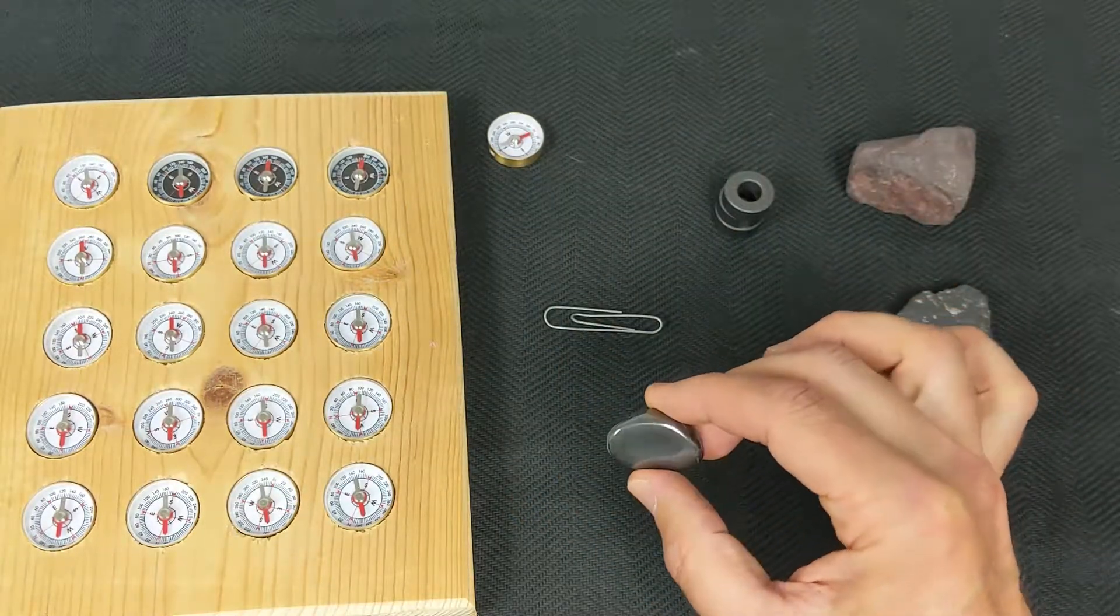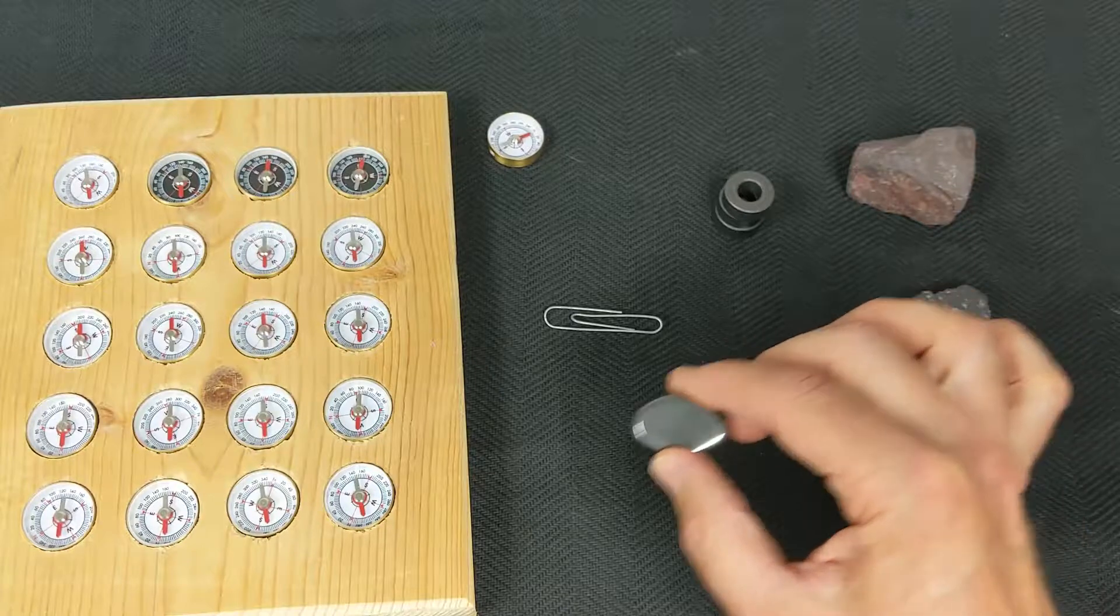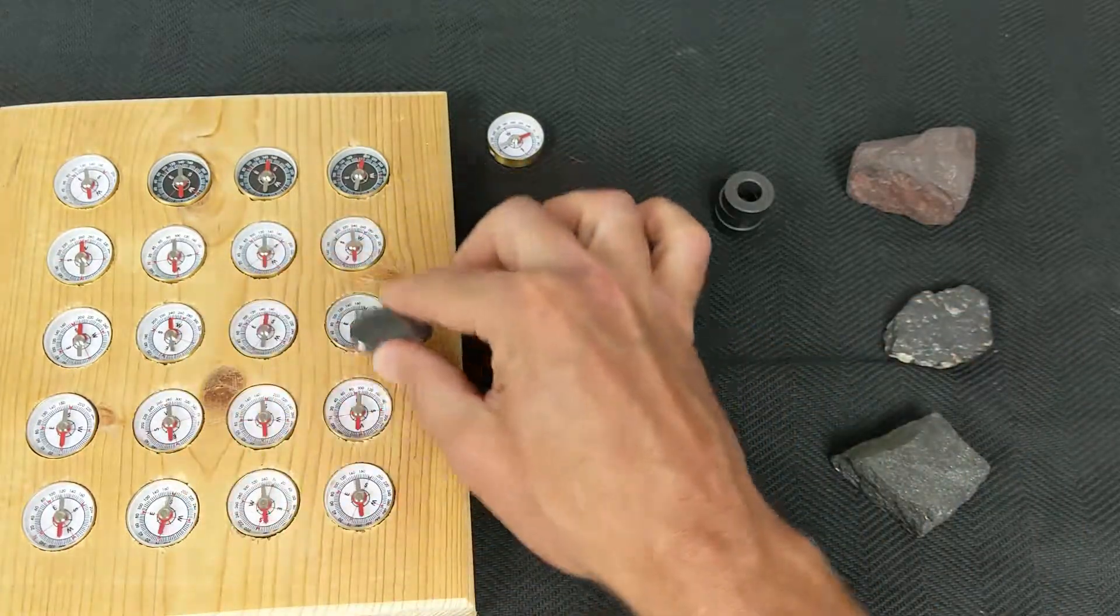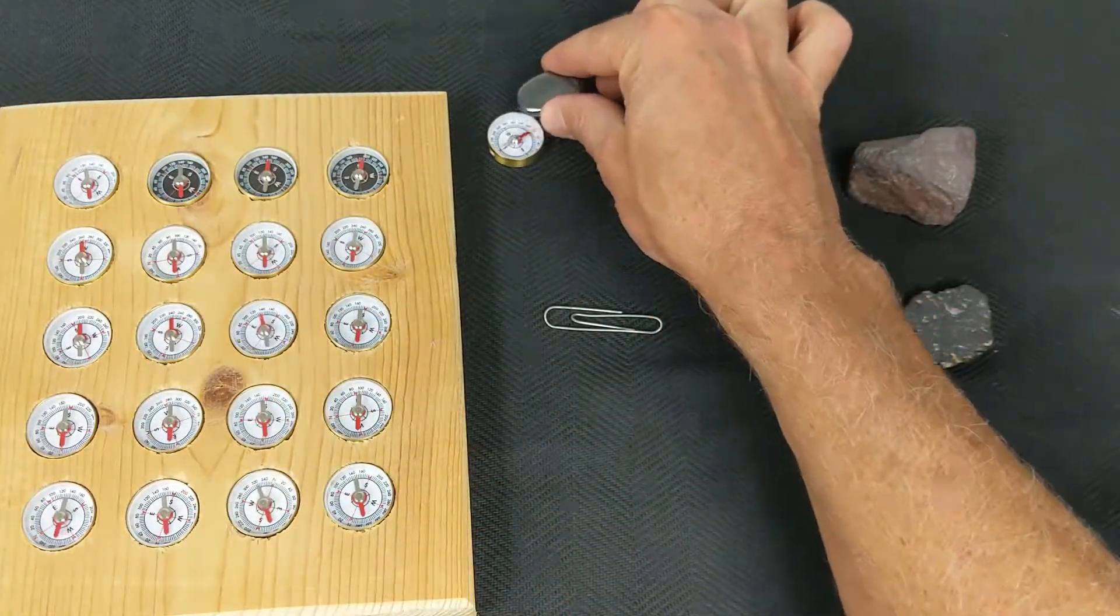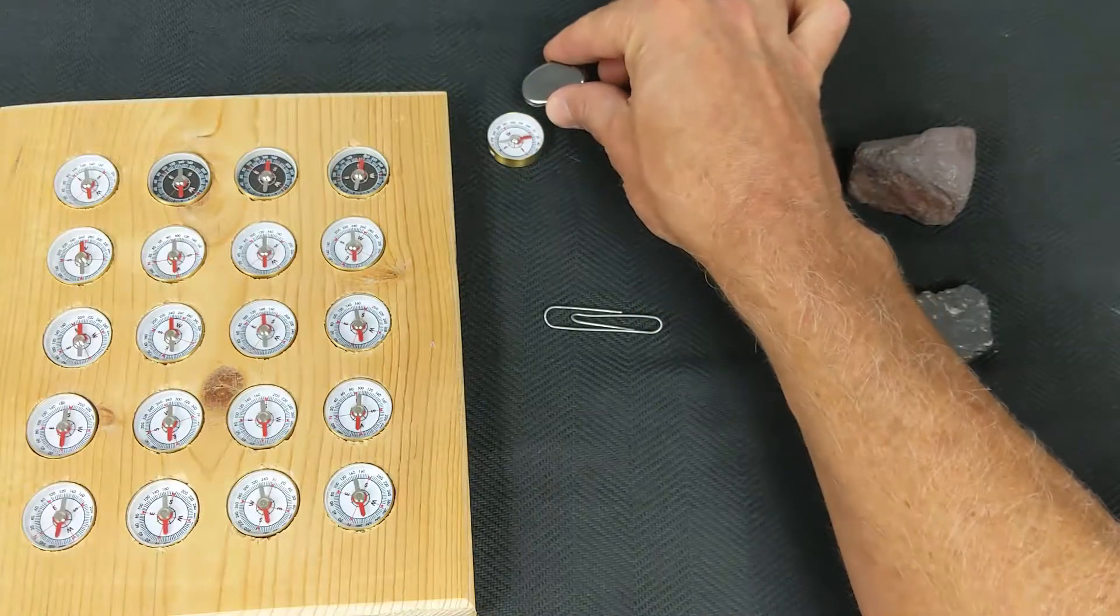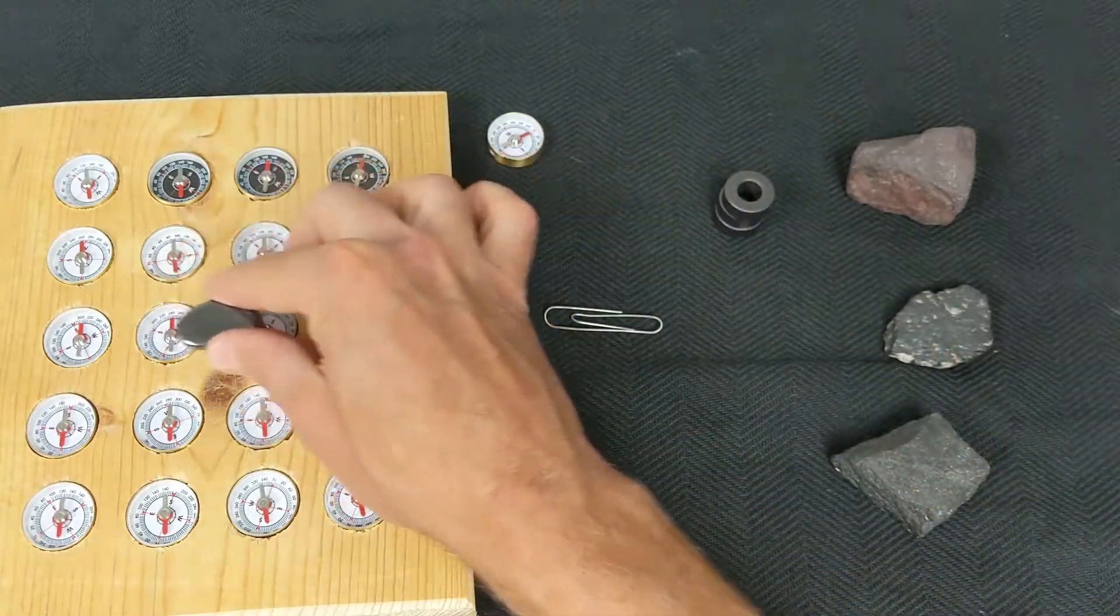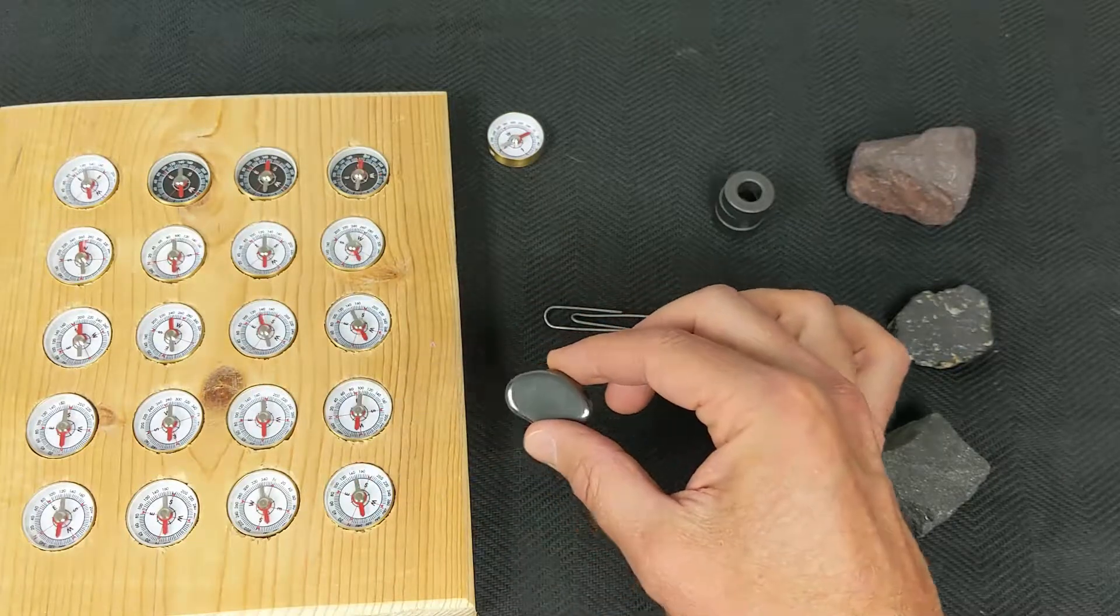Again, even this small piece of hematite where I could detect nothing with the magnet, when I pass it over the compasses or hold it near an individual compass, I can see the compass needle deflect ever so slightly, indicating that this rock does indeed have magnetic properties.